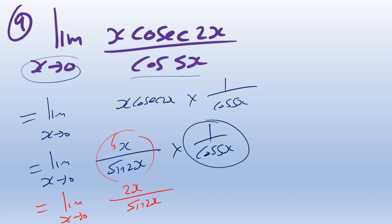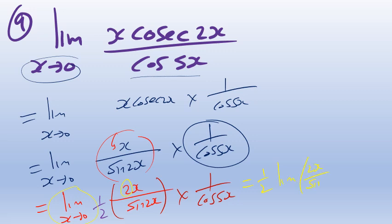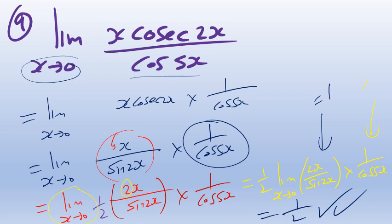To get 2x over sin(2x), I introduce a 2 in the numerator, but I must multiply the whole expression by 1/2 to compensate. So the limit becomes (1/2) × (2x / sin(2x)) × (1 / cos(5x)) as x → 0. The limit of 2x/sin(2x) as x → 0 is 1, and 1/cos(0) = 1. Therefore the final answer is 1/2.